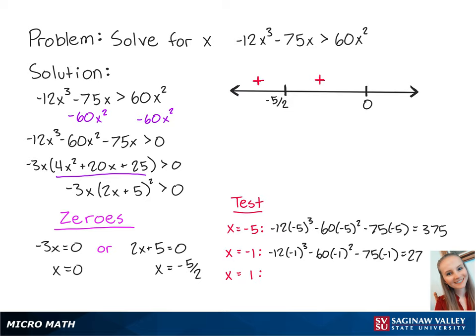For x equals 1, we have negative 12 times 1 cubed minus 60 times 1 squared minus 75 times 1, which is equal to negative 147. Since this number is negative, x values greater than 0 will make the left side of the inequality negative.